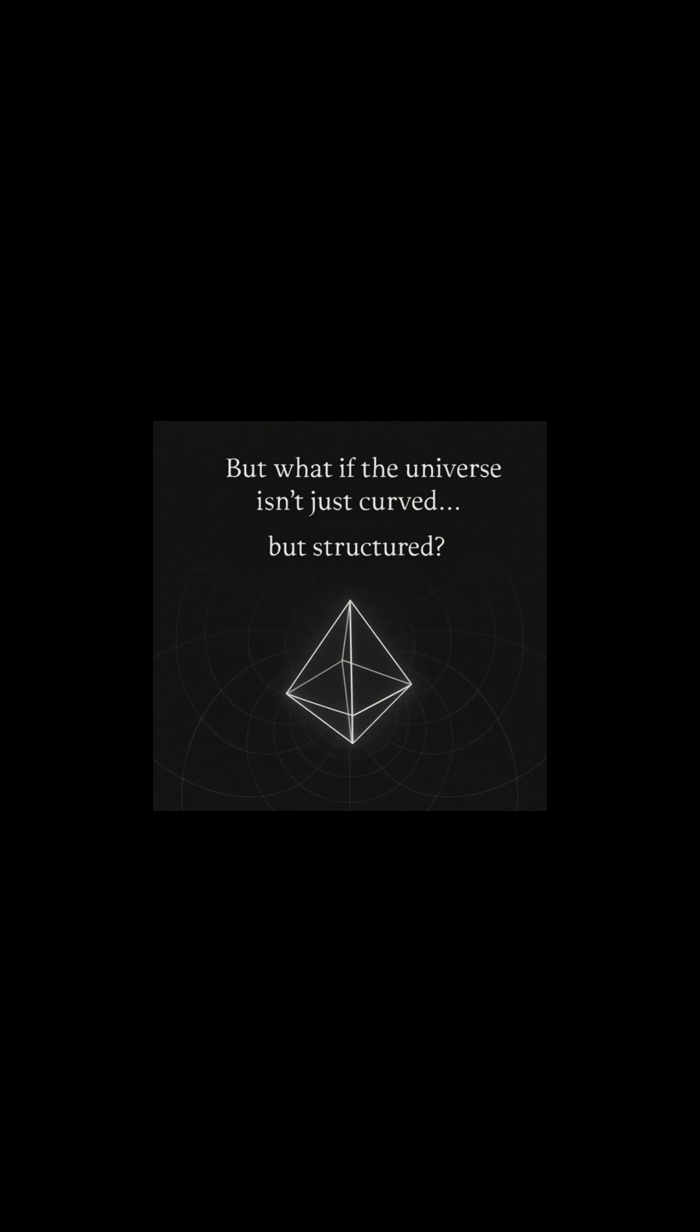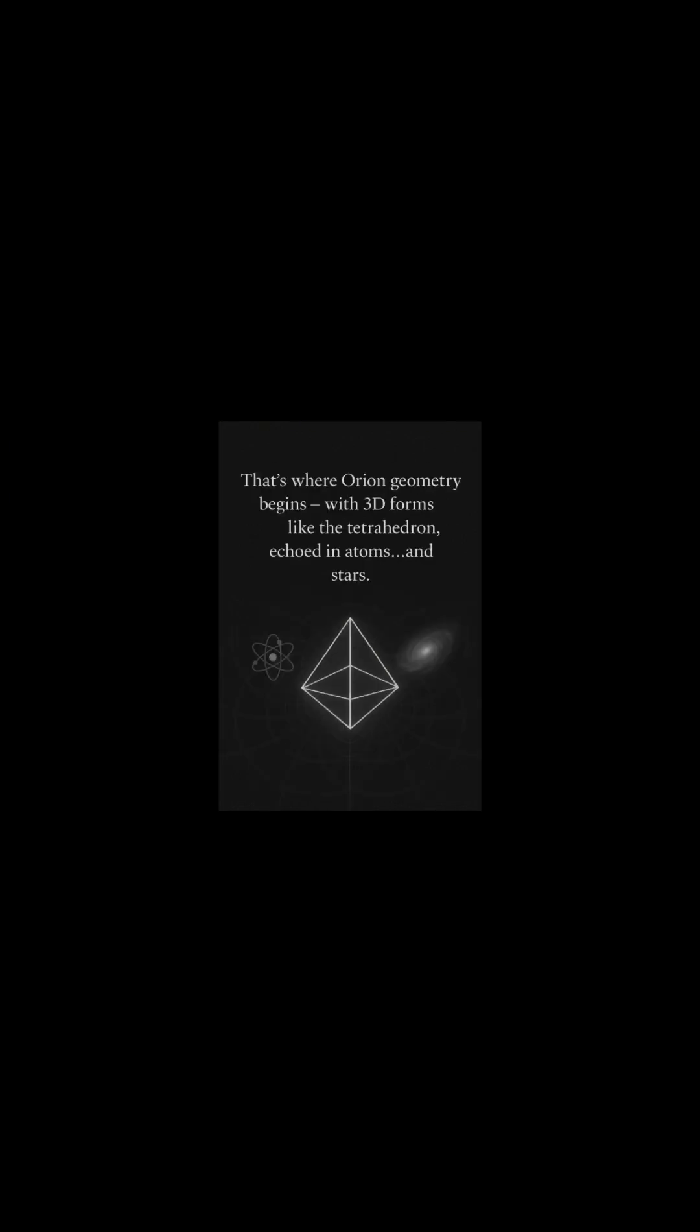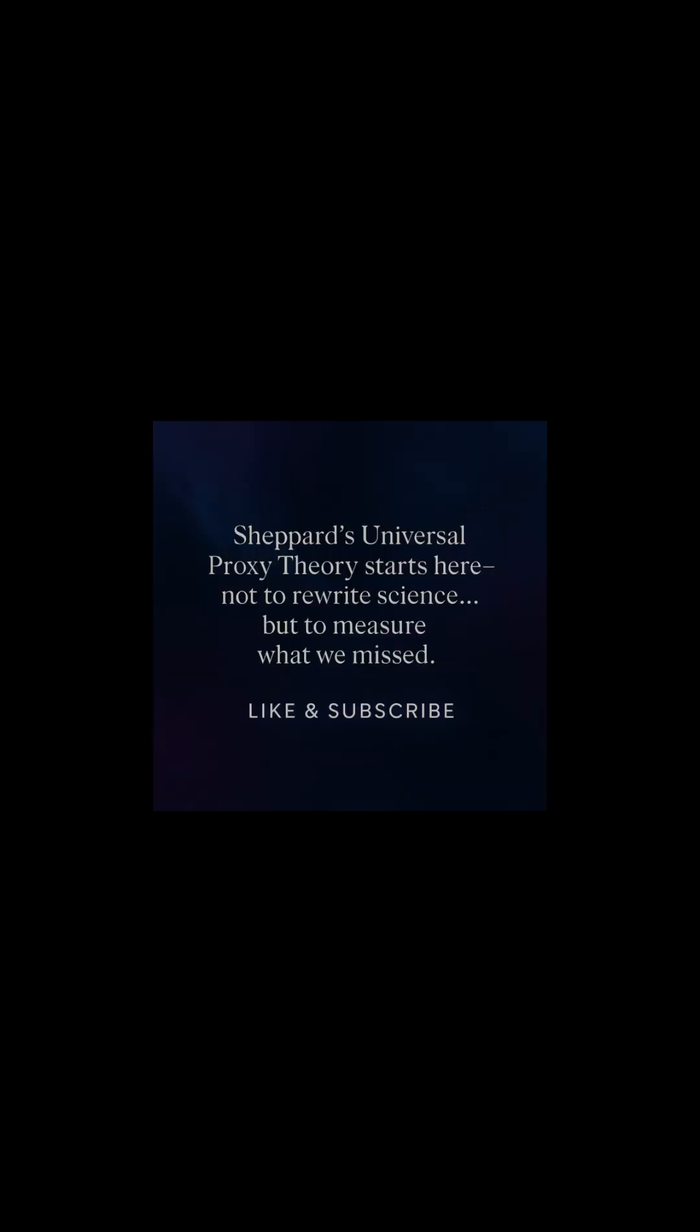But what if the universe isn't just curved, but structured? That's where Orion geometry begins, with 3D forms like the tetrahedron echoed in atoms and stars. Shepard's universal proxy theory starts here. Not to rewrite science, but to measure what we missed.